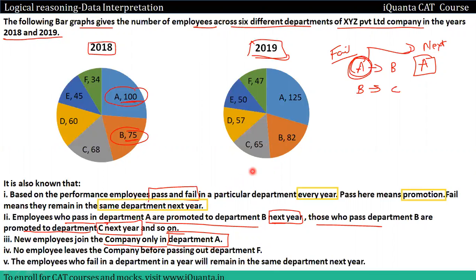No employee leaves the company before passing out of department F. Employees who fail in a particular department will remain in the same department the next year. Every year new students join department A.